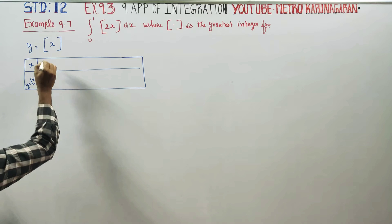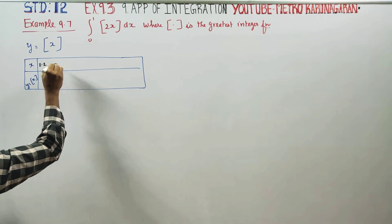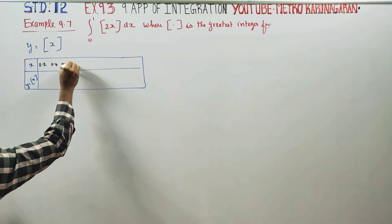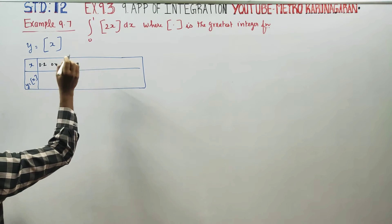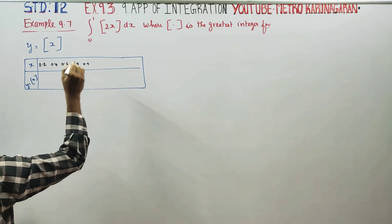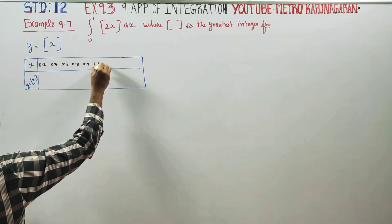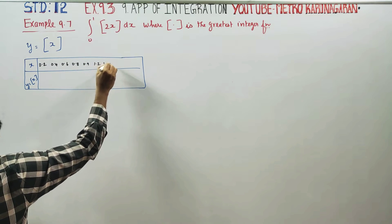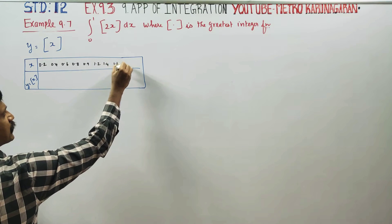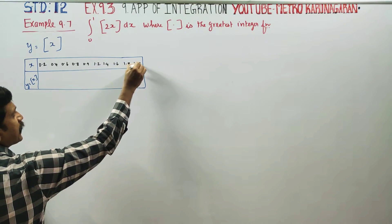For the graph, we take x values: 0.2, 0.4, 0.6, 0.8, 0.9, then 1.2, 1.4, 1.6, 1.8, 1.999.